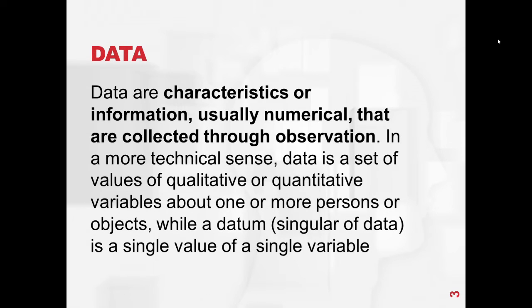So what is data? Data are characteristics or information, usually numerical, that are collected through observation. In a more technical sense, data is a set of values of qualitative or quantitative variables among one or more subjects or objects, while a datum — the singular of data — is a single value of a single variable.